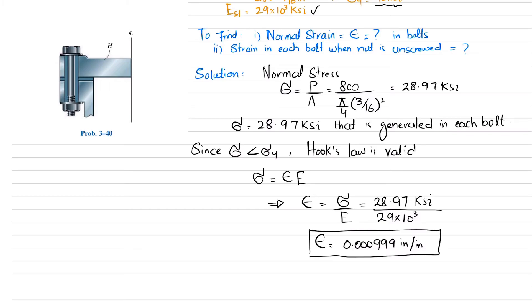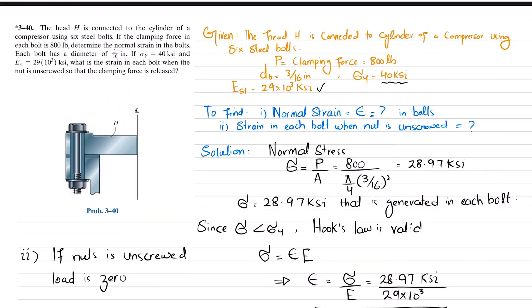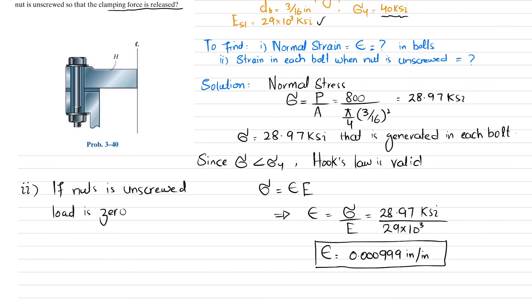In part B, if the nut is unscrewed, the load is zero. Since the clamping force is released, the load will be zero. Therefore, strain will be zero.